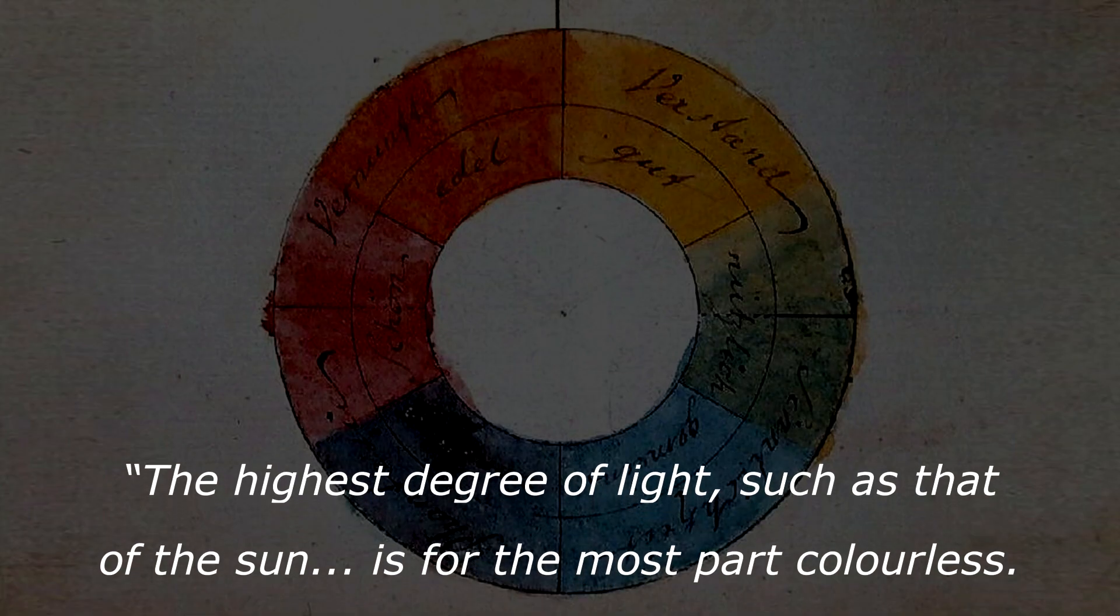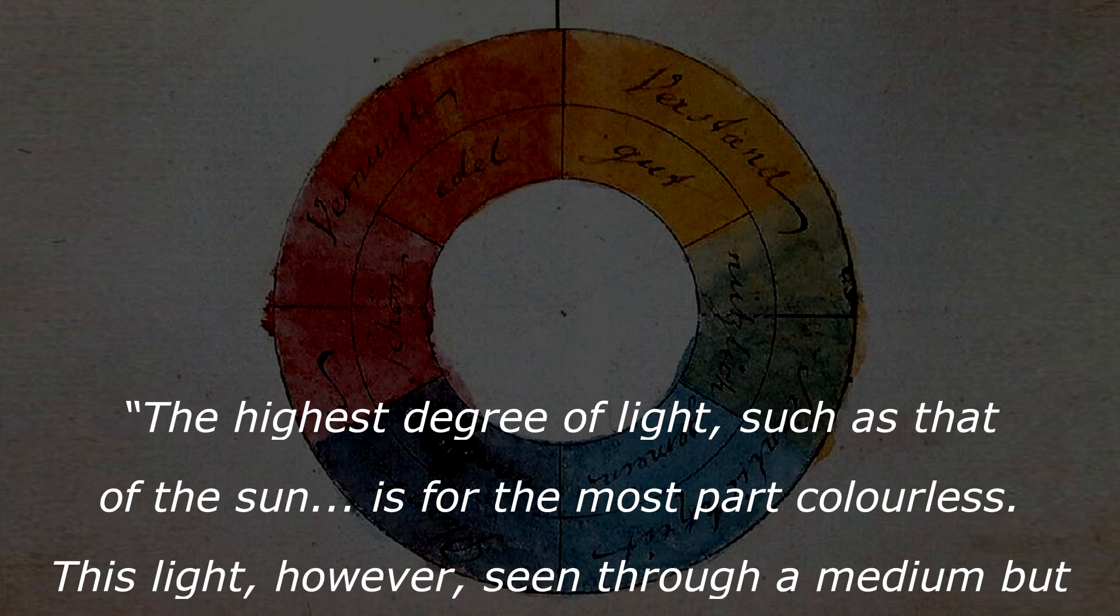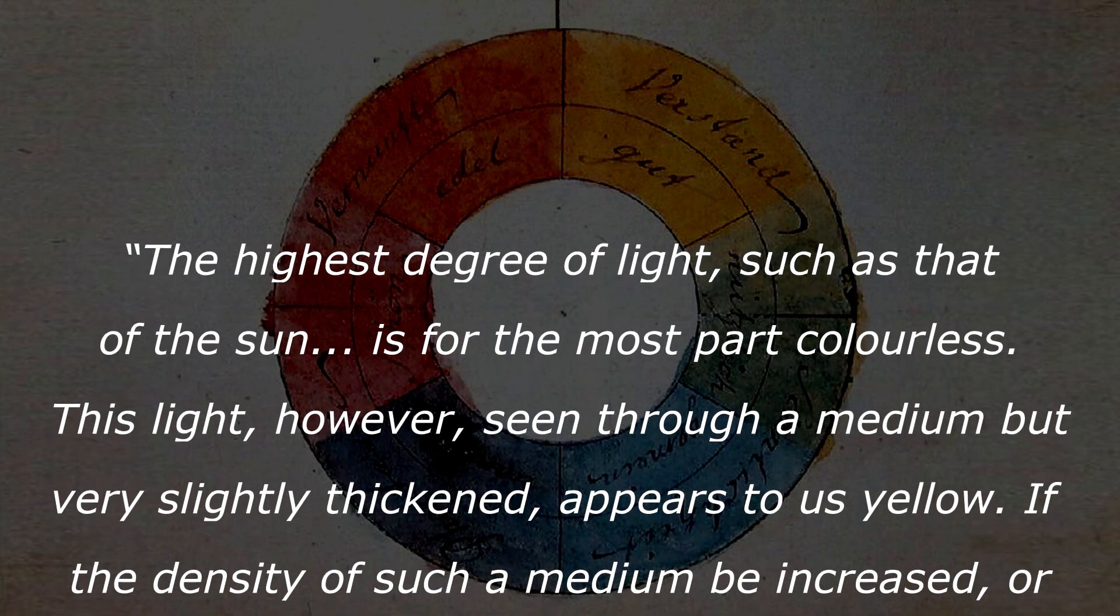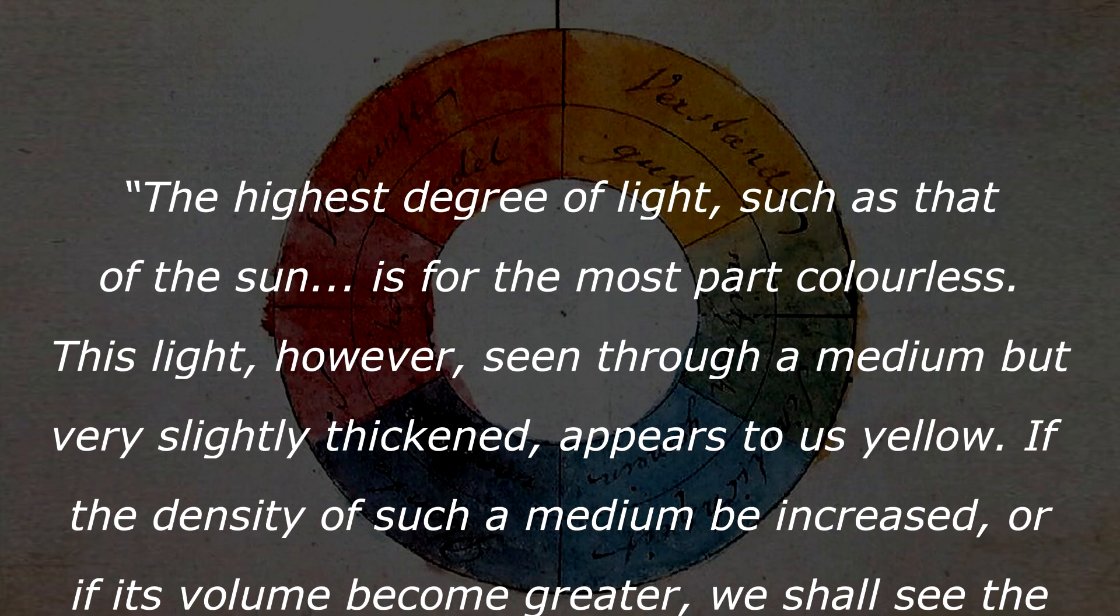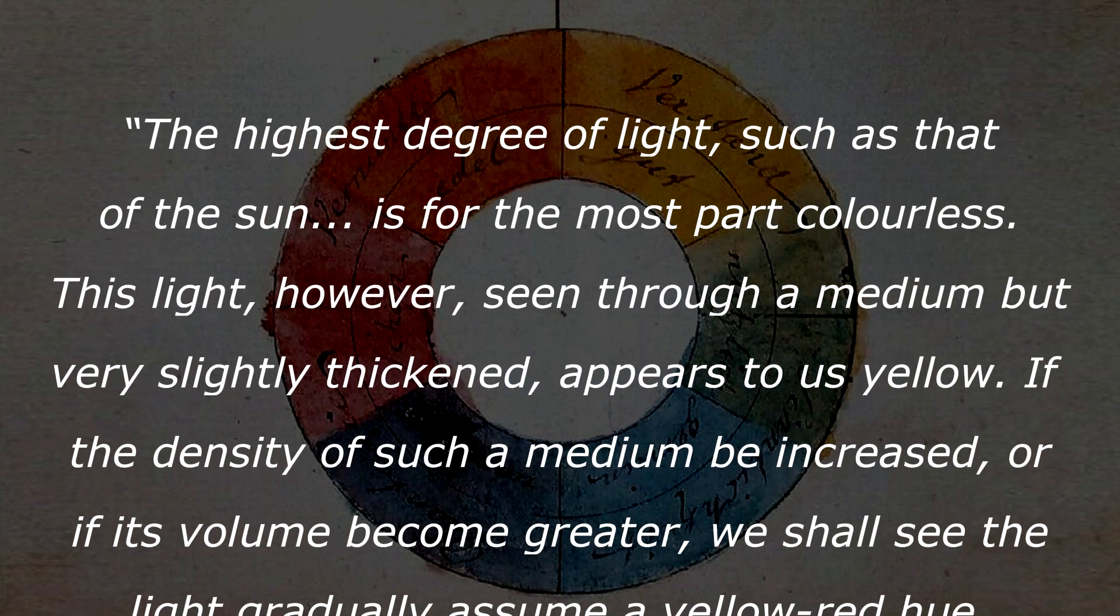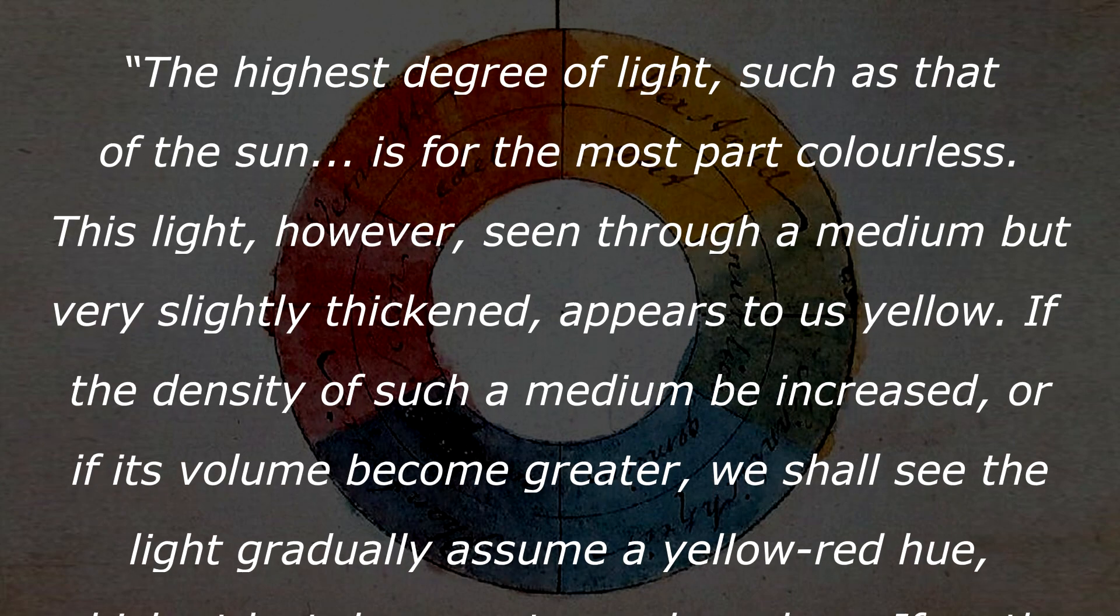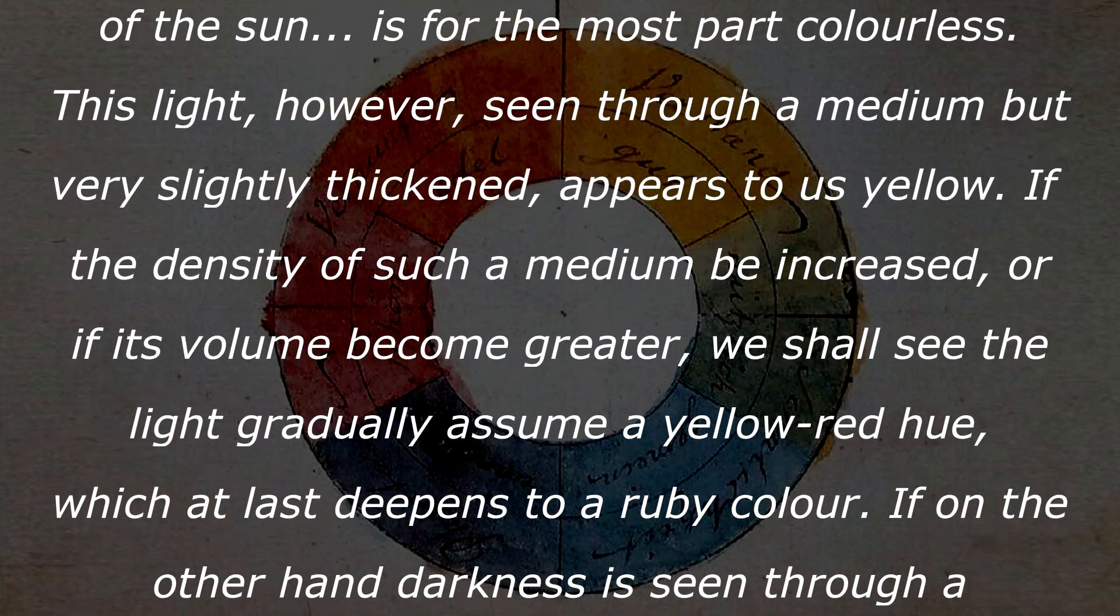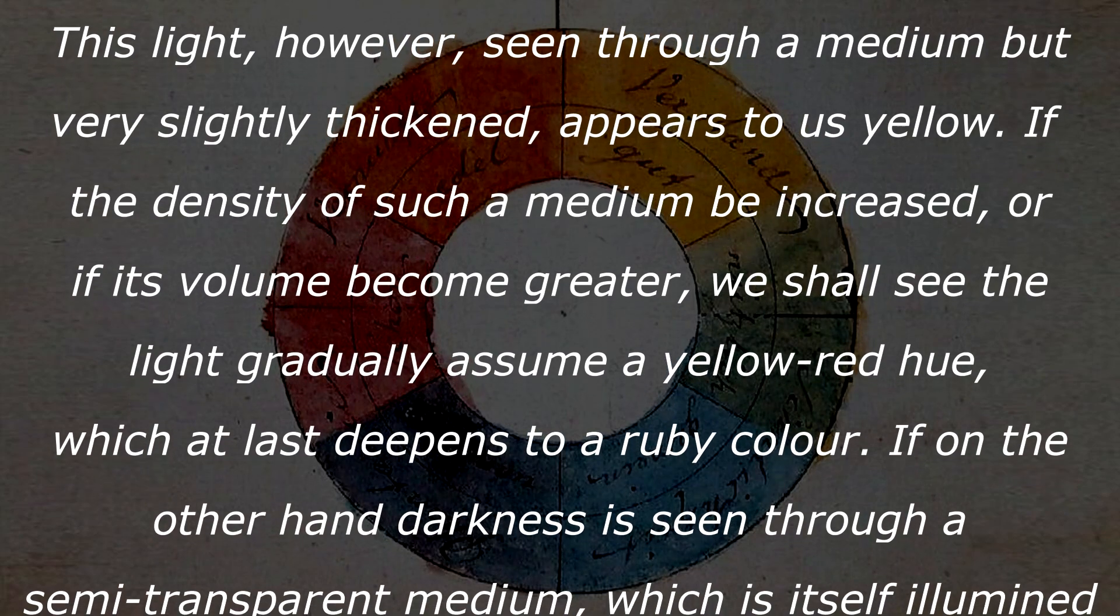He wrote: The highest degree of light, such as the sun, is for the most part colorless. This light, however, seen through a medium but very slightly thickened, appears to us yellow. If the density of such medium is increased, or if its volume becomes greater, we shall see the light gradually assume a yellow-red hue, which at last deepens to a ruby color.